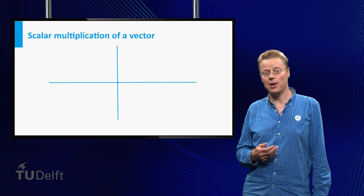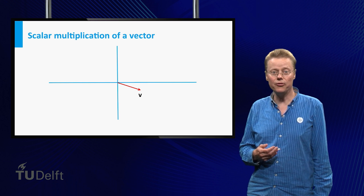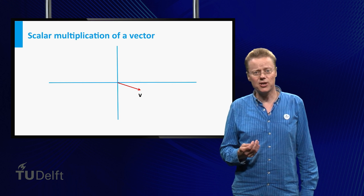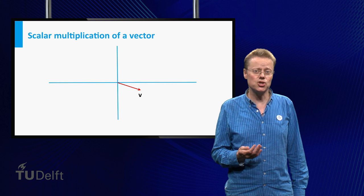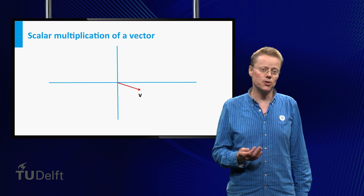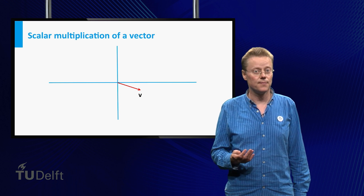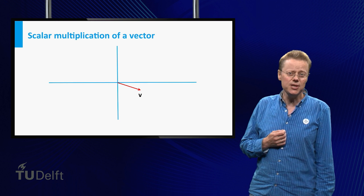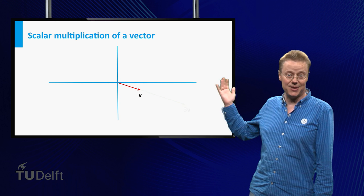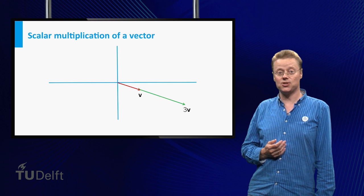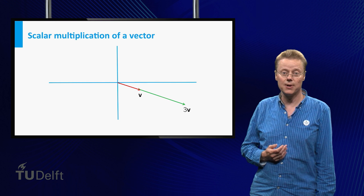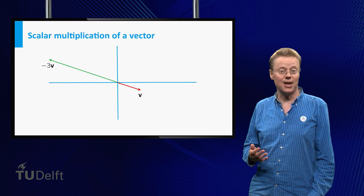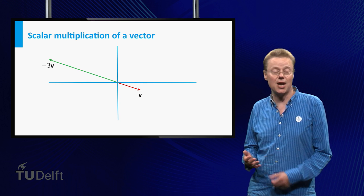Vectors can also be multiplied by a number, often called a scalar in this context. Briefly, multiplying a vector by 3 means that its direction is left unchanged and its length is multiplied by 3. For instance, consider this vector v. 3 times v is given by this. Multiplying v by minus 3, on the other hand, will give a vector which has the opposite direction to v, and its length is still 3 times that of v.